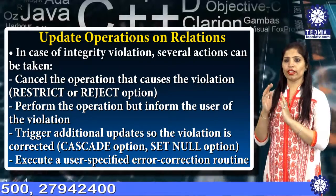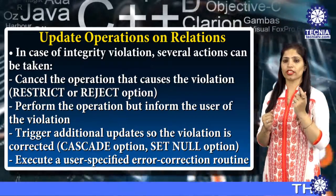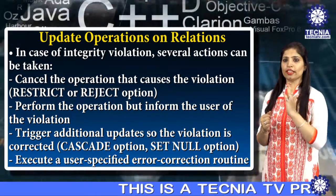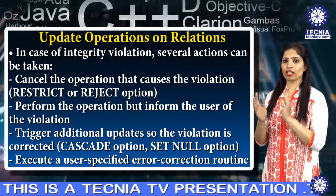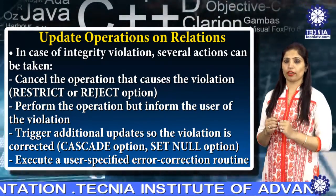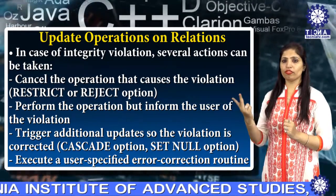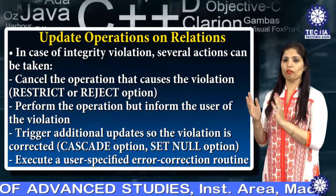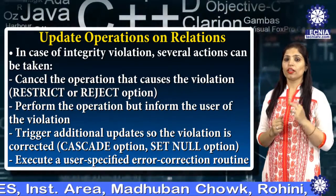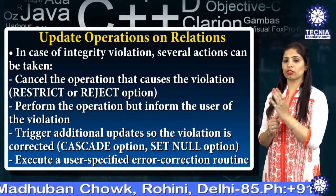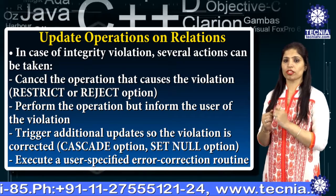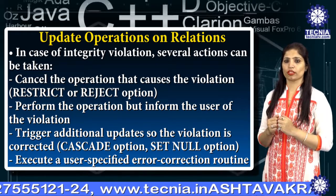In case of integrity violation, several actions can be taken: cancel the operation that causes the violation (restrict or reject), perform the operation but inform the user of the violation, or trigger an additional update so the violation is corrected using the cascade option or the set null option.